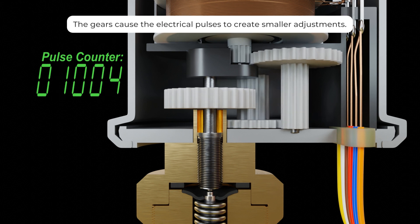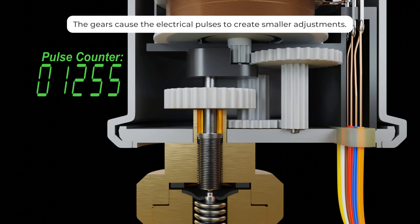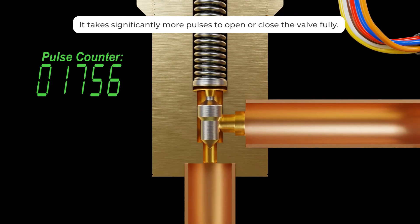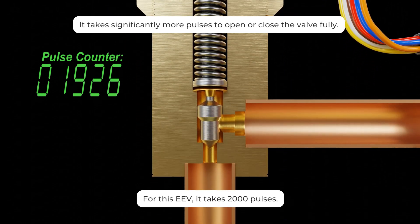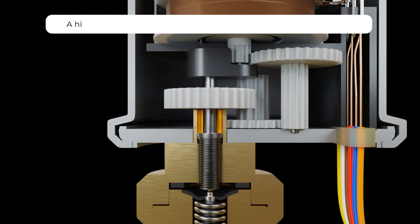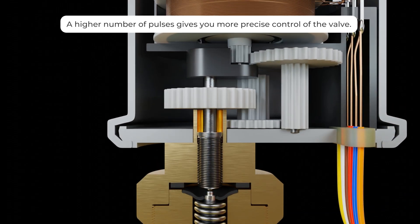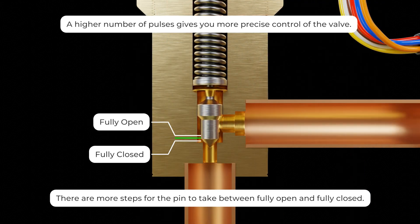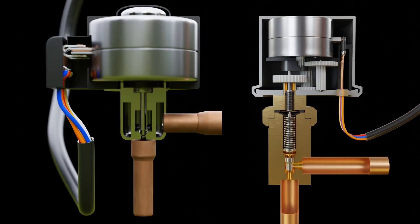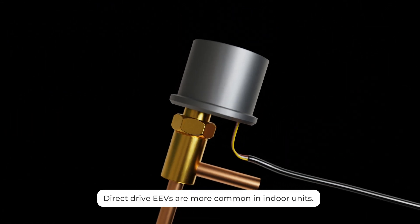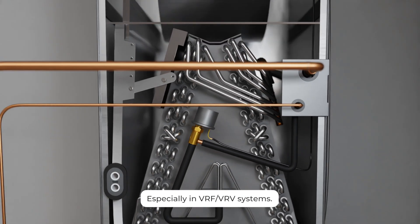The gears cause the electrical pulses to create smaller adjustments than the stepper motor so it takes significantly more pulses to open or close the valve fully. For this EEV it takes 2000 but some EEVs have a range from 0 to 3000 or even 6000 pulses. A higher number of pulses gives you more precise control of the valve since there are more steps for the pin to take between fully open and fully closed. Unlike indirect drive EEVs, direct drives are more common in indoor units especially in VRV and VRF systems.